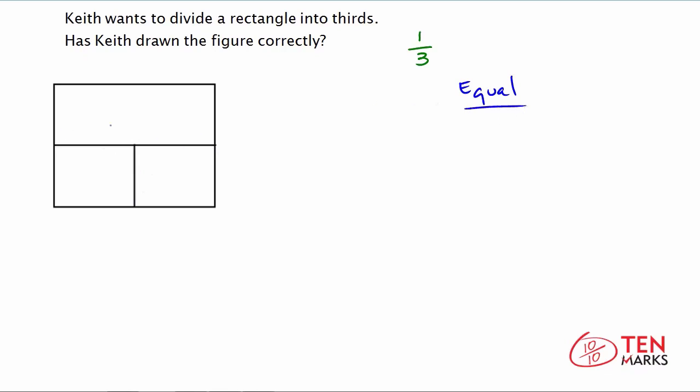Keith has not drawn this figure correctly. And the reason is, this shape up here is larger than the other two. So this shape up here is not one third.